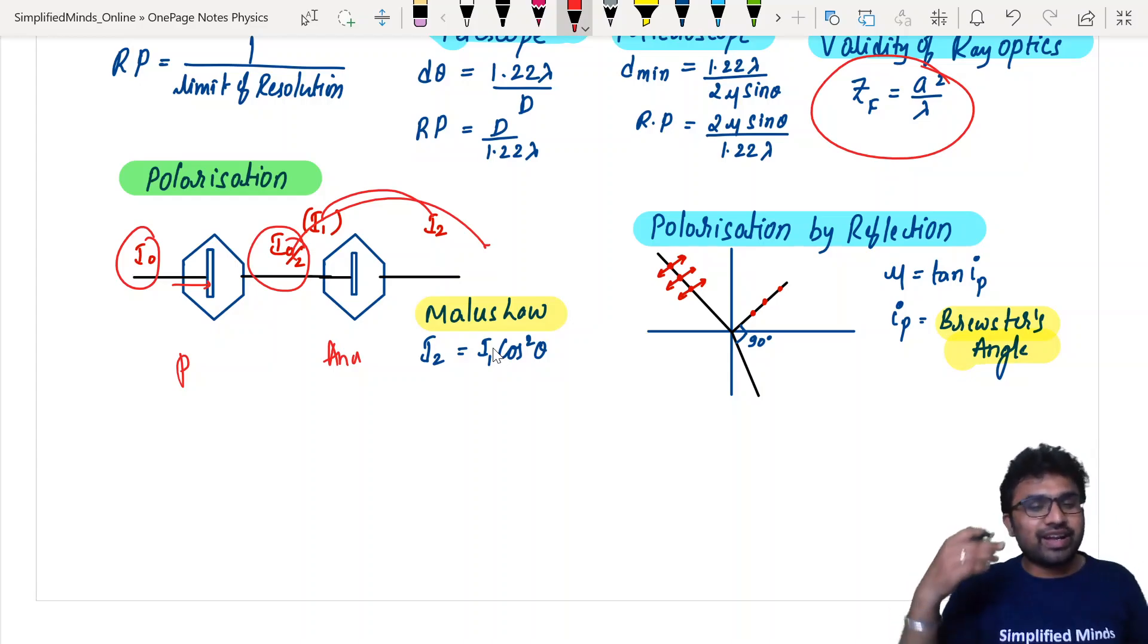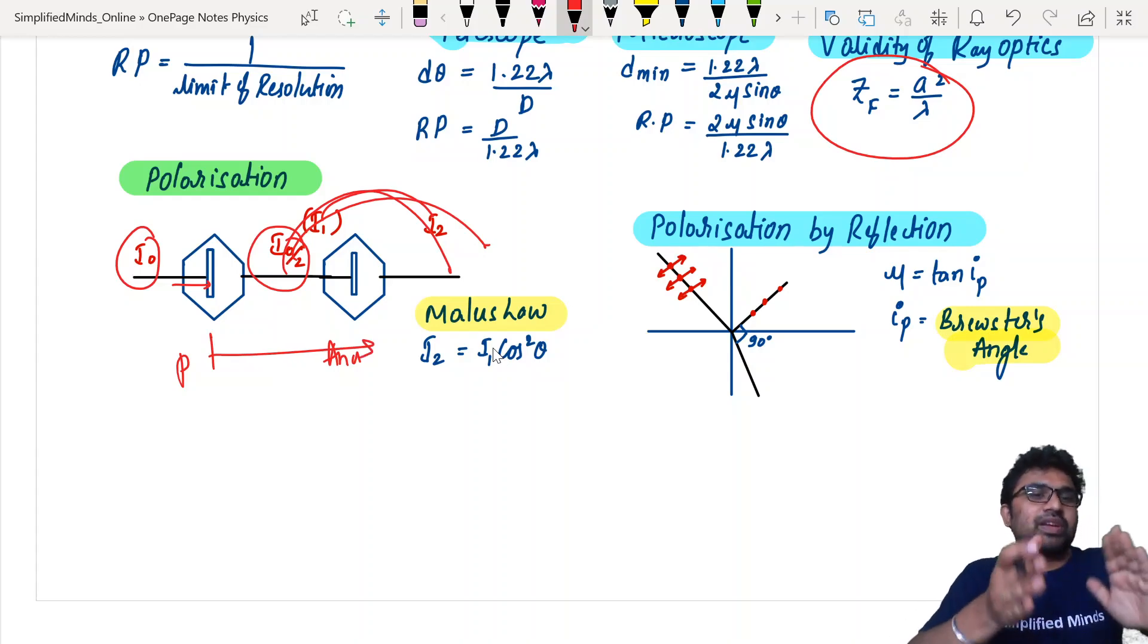What is coming out of this is I2 equals I1 into cos squared theta. There's some dogs barking, so don't mind. I'm trying to record very late at night so there's no sound, but there's always some dogs barking. Anyway, your KEE exam is approaching, you have to finish very quickly. Basically, what happens is I2 equals I1 into cos squared theta.